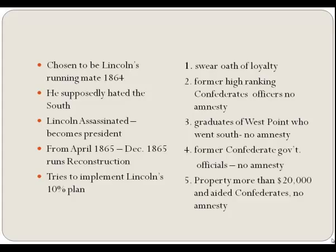Johnson interpreted Lincoln's plan to suit himself. He appointed provisional governors to the defeated states and required them to call special conventions to draft new constitutions, abolish slavery, and renounce secession. After ratification of these constitutions, the newly elected governments were to send representatives to Congress, and the states would thereby be restored to the Union. It doesn't sound like too bad a plan—it's almost Lincoln's 10% plan.